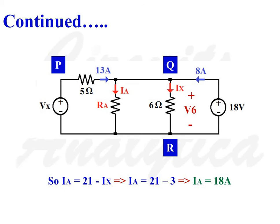So IA is equal to 21 minus IX, IA is equal to 18 ampere.